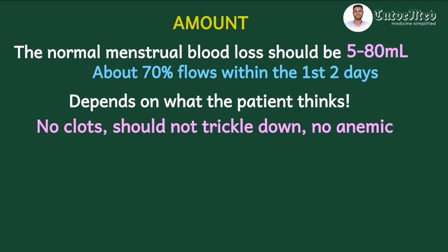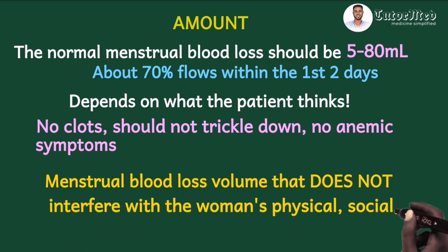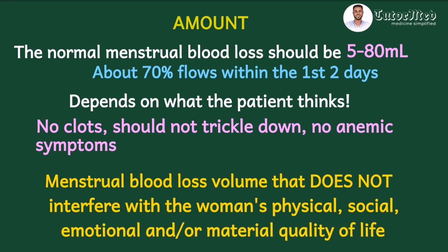Menses is said to be normal in amount when the menstrual blood loss does not interfere with the woman's physical, social, emotional, or material quality of life. Physically, the woman is strong during the flow with no anemic symptoms. Emotionally, she is not bothered by her menstrual flow. Socially, she can engage in her activities without concern. And materially, she doesn't have to change her sanitary pads excessively — typically, women use three pads a day, and exceeding that is considered abnormal.